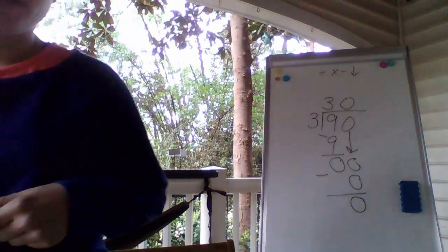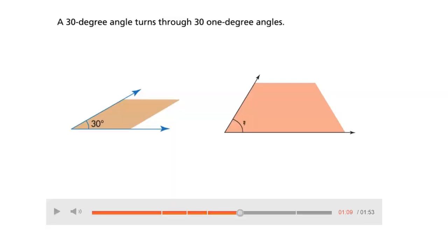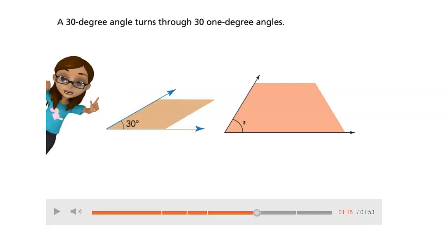Therefore, the acute angle is 30 degrees. Now remember a 30 degree angle turns through 30 one-degree angles. This girl says that a measure of a unit angle is 1 degree.